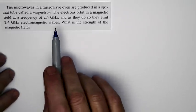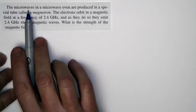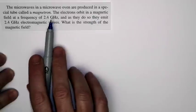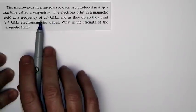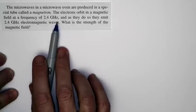Next time you cook food in a microwave oven, I want you to consider this. The microwaves, the electromagnetic waves, are actually produced by electrons orbiting in circular orbits around magnetic field lines, and they're orbiting at a frequency of 2.4 gigahertz. They're orbiting 2.4 billion times every second. That's a remarkable fact.